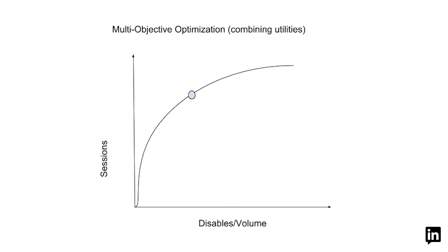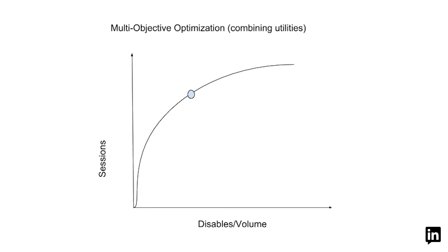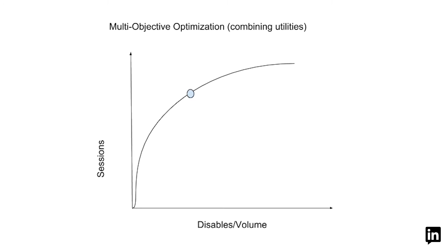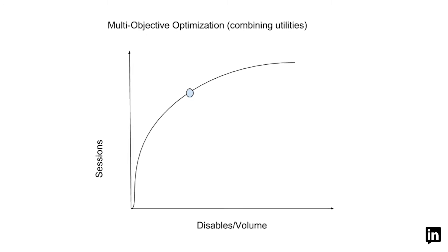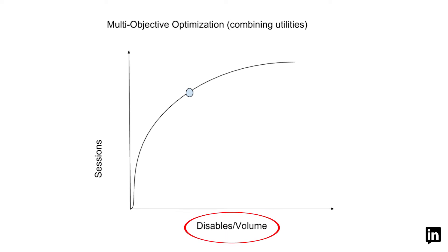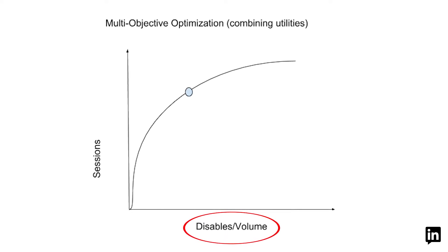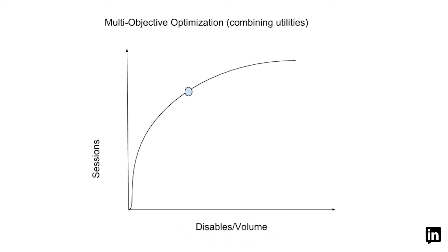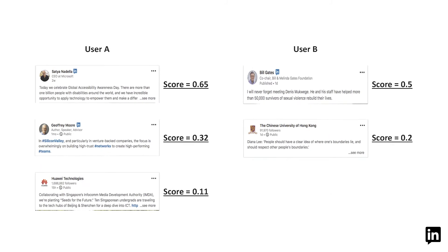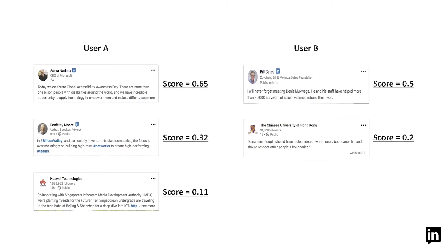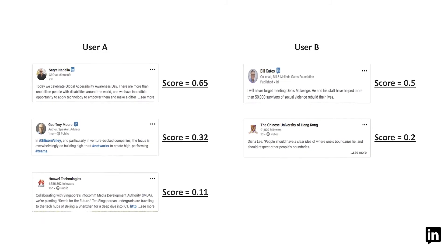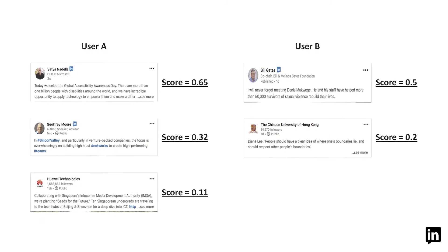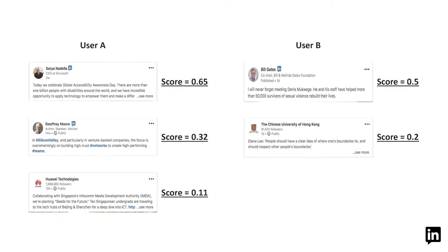We trade off the positive effects of sending a notification — user engagement — against the negative effects, particularly app notification disables. We use send volume as a proxy to represent user disables.